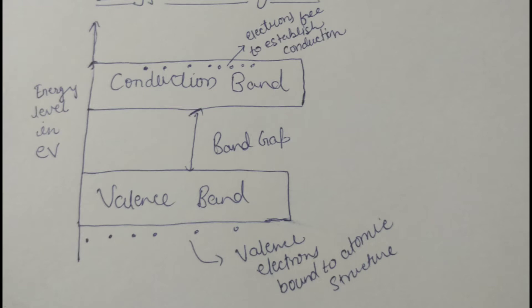Free electrons are the mobile charge carriers that enable metals to conduct electricity. This can be illustrated with the energy band diagram, which shows two energy levels: a valence band and a conduction band. Due to the intermixing of atoms in solids, instead of single energy levels, there will be a band of energy levels formed. This set of closely packed energy levels is called energy bands.